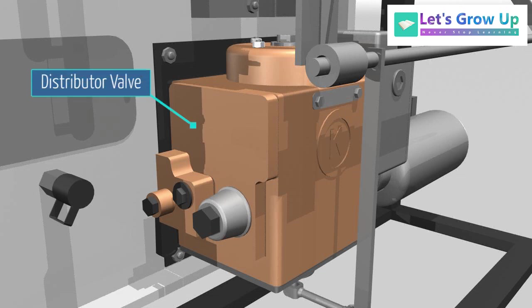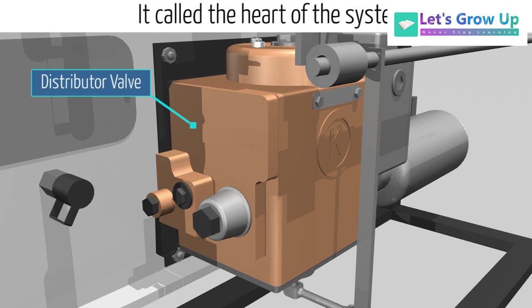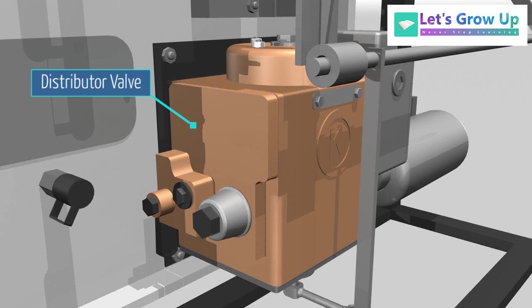Distributor valve. It is the most important functional component of the air brake system and is also called the heart of the system. The function of the distributor valve is to distribute compressed air received from brake pipe to auxiliary reservoir and control reservoir air brake system.